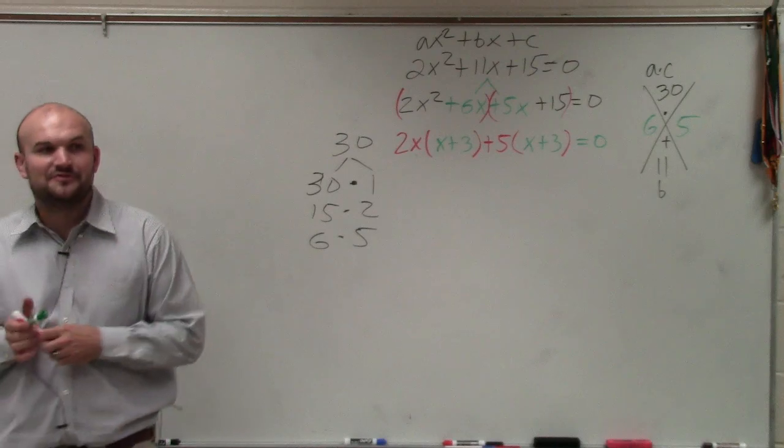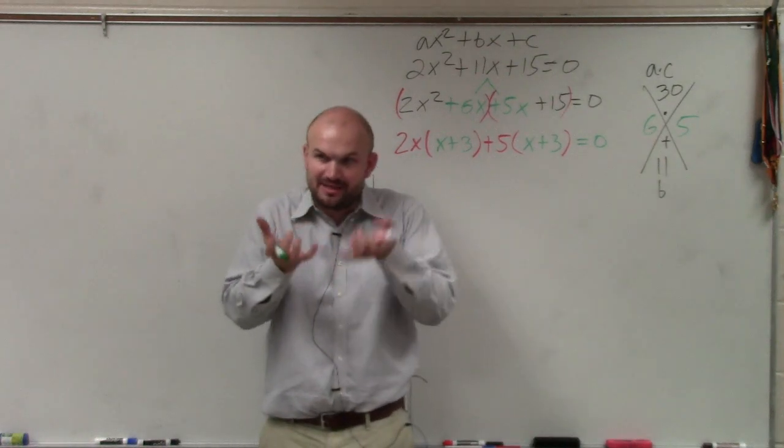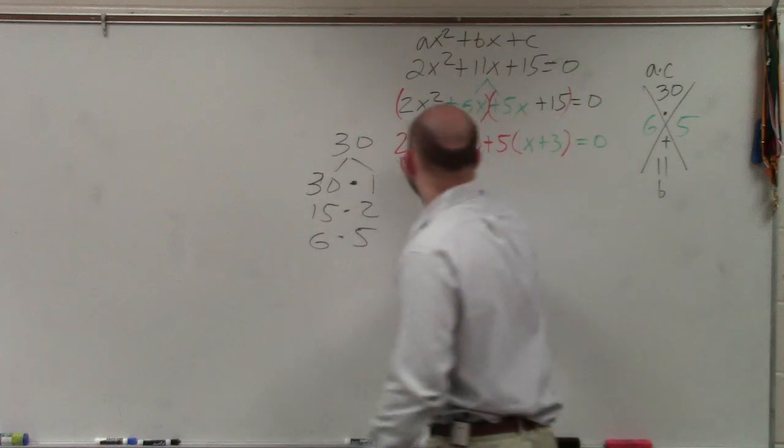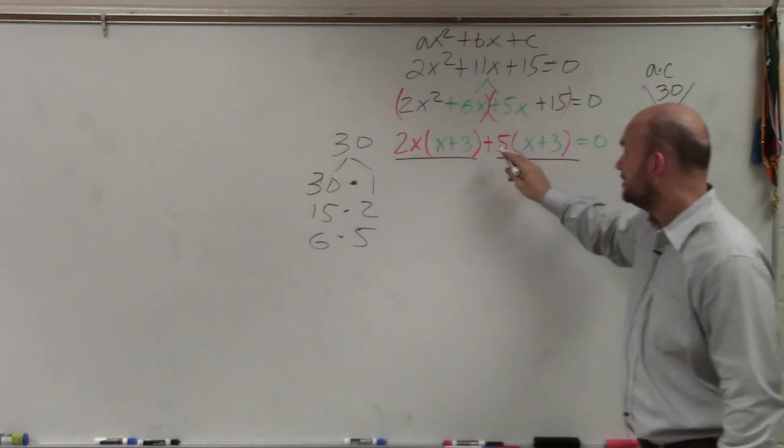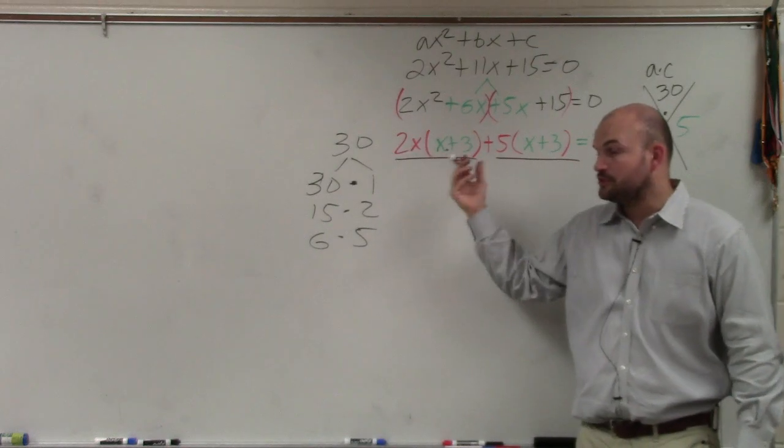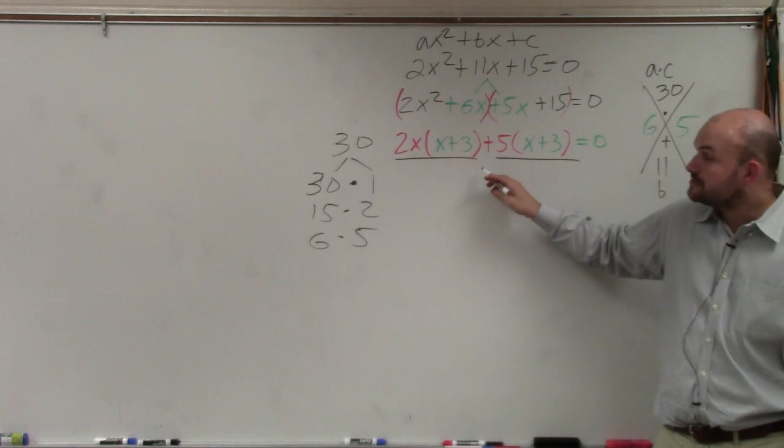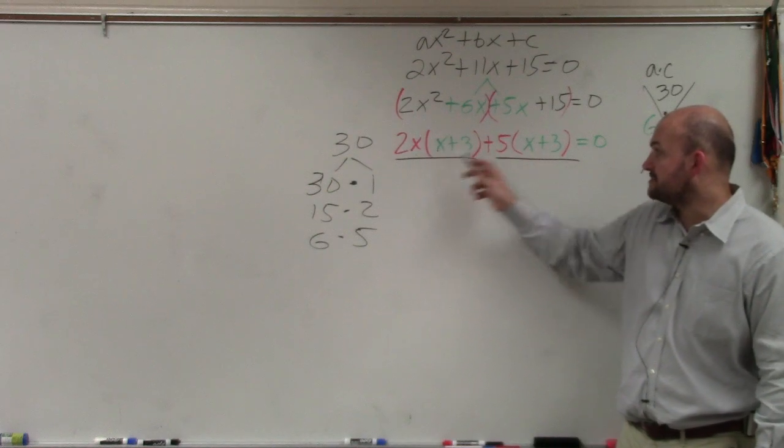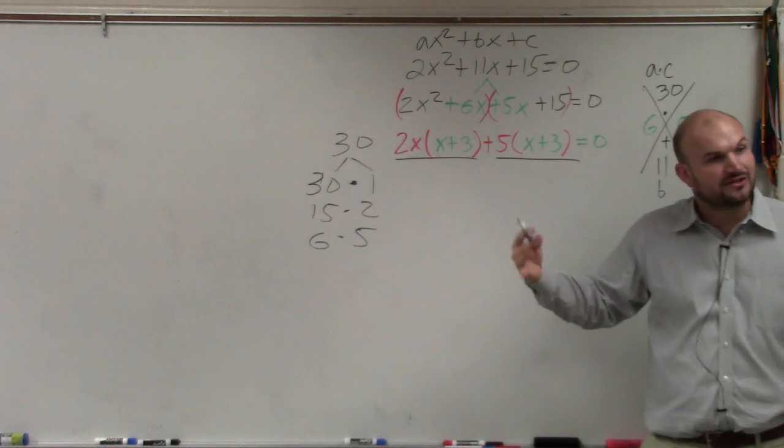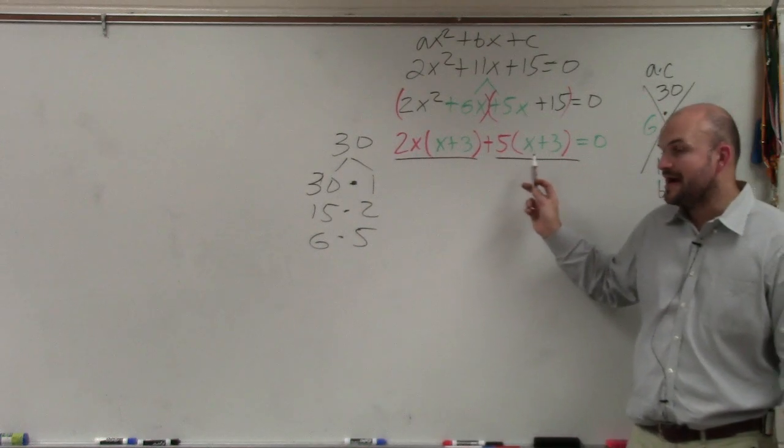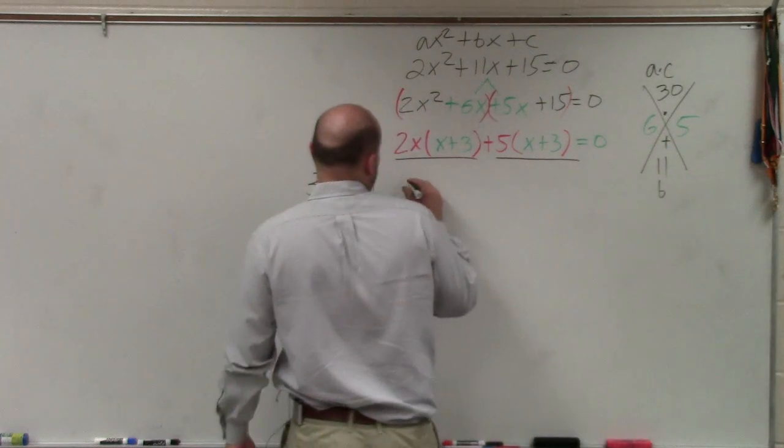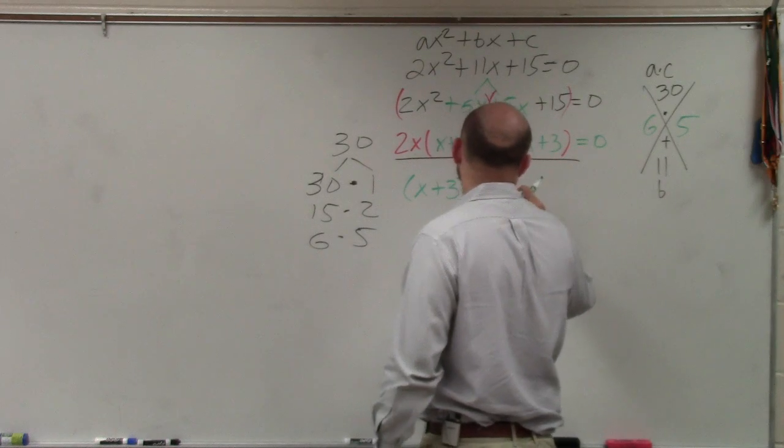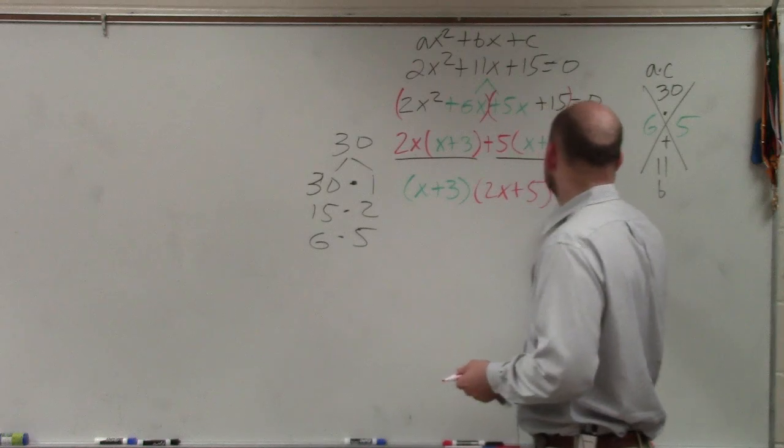So, now we have to factor out again. Because remember, we're trying to get this to be binomial times binomial. What you can see that these terms are separated by this addition problem. Here's a product. Here's a product. The two products are separated by this addition. So, what we look at is just like we did here. These two terms are separated by addition. So, we're going to go ahead and factor out the GCF again. What do these two terms have in common? An x plus 3. So, I factor out an x plus 3. And I'm left with 2x plus 5.